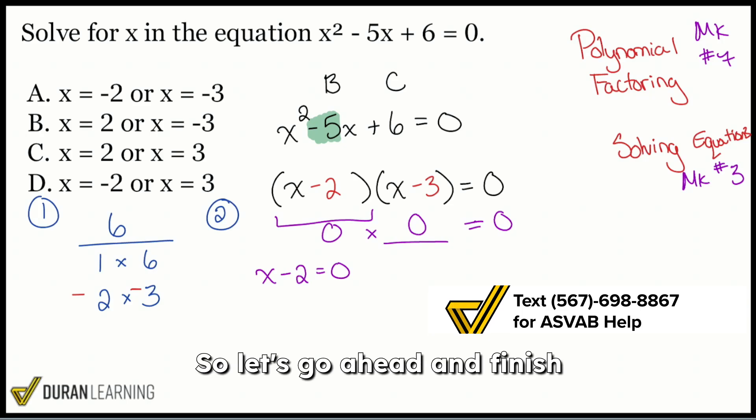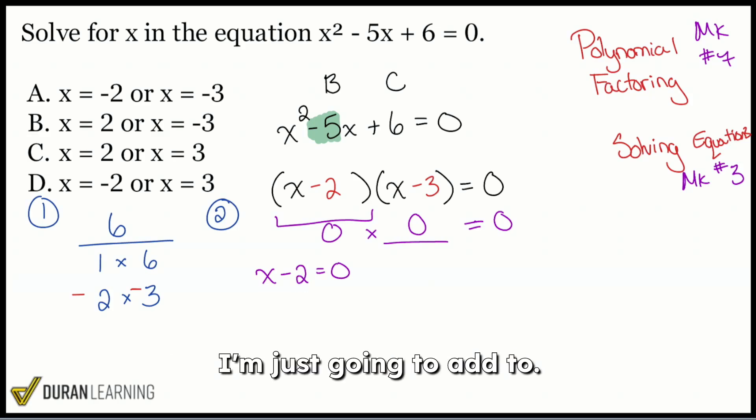So let's go ahead and finish up the problem here. We have x minus 2 equals zero right over here. To solve that, I'm just going to add 2 to both sides. We have x equals positive 2 over here.